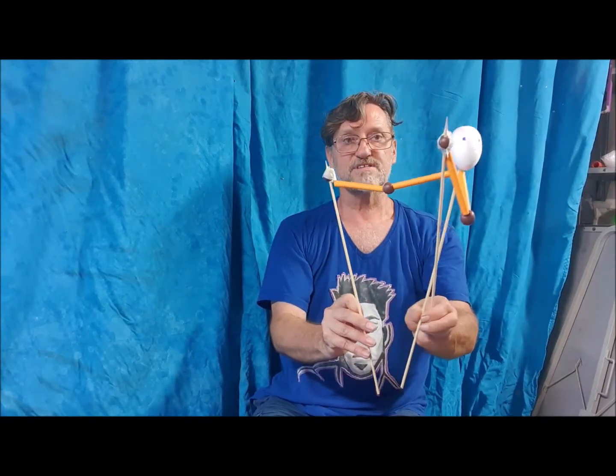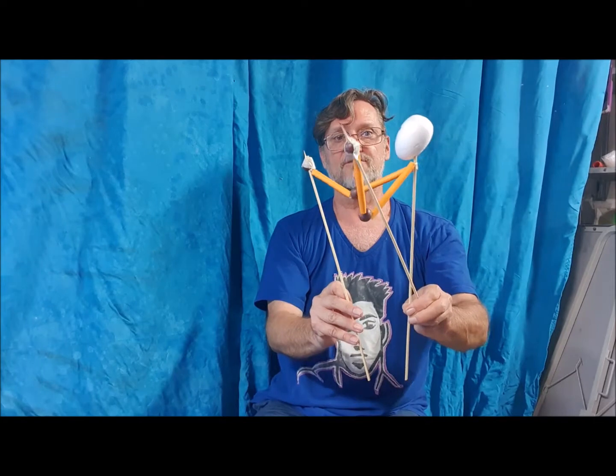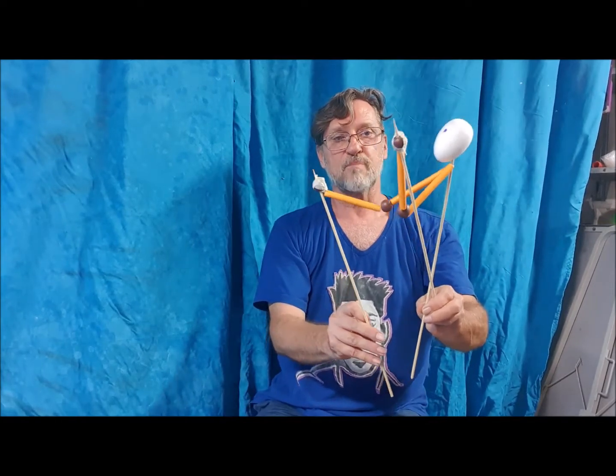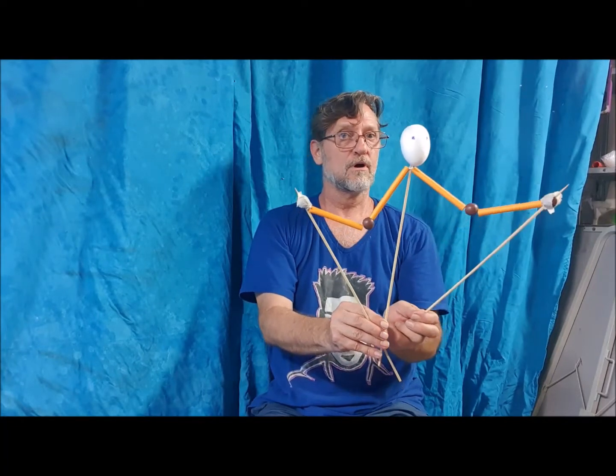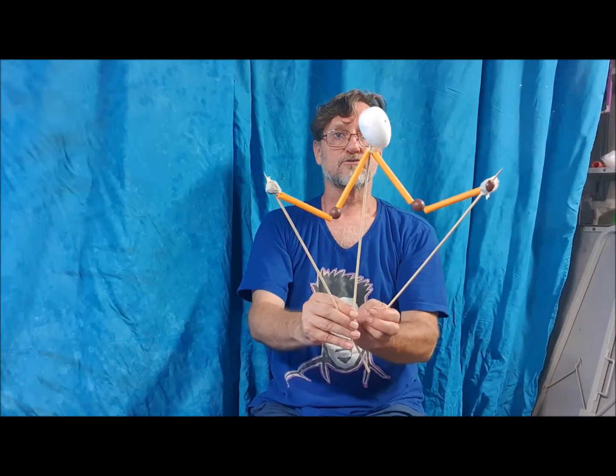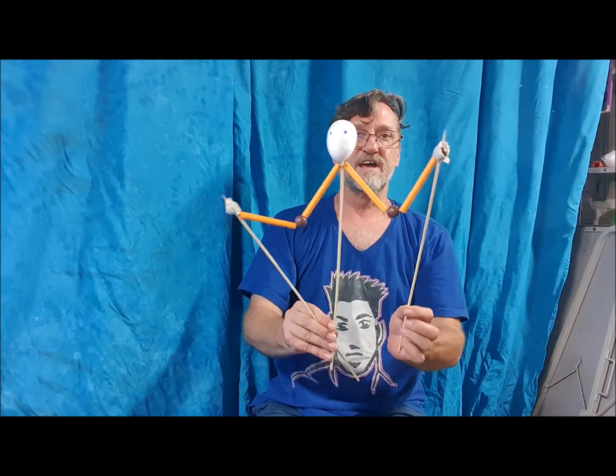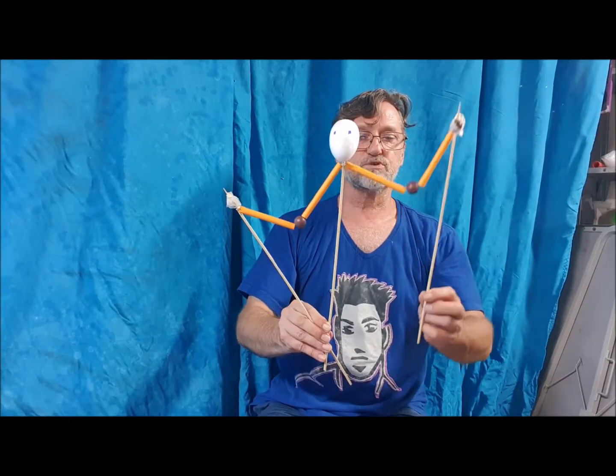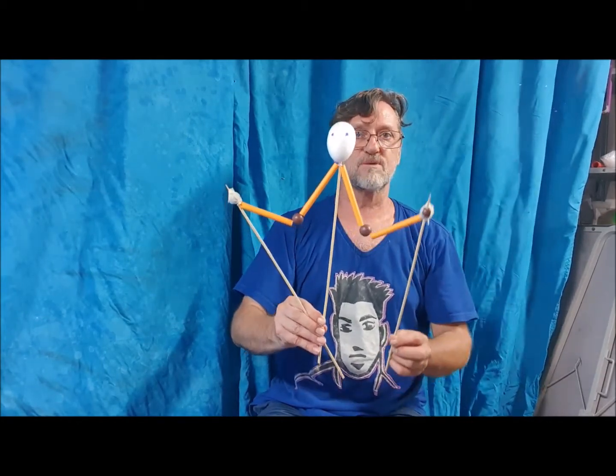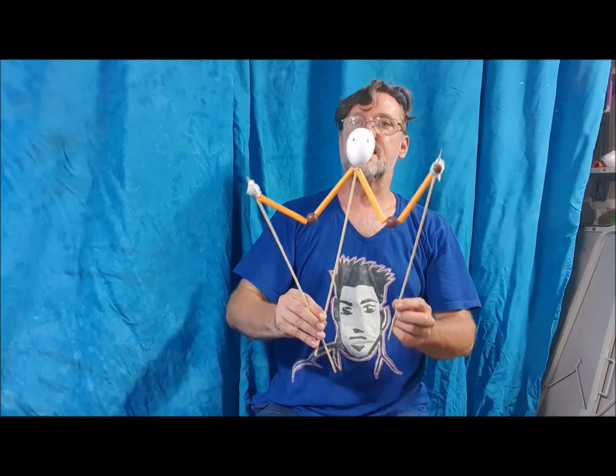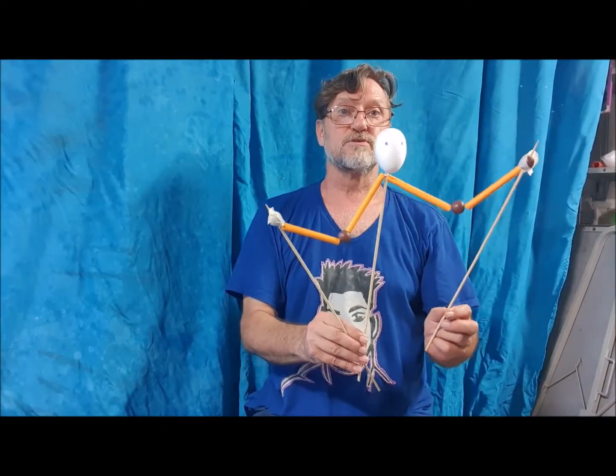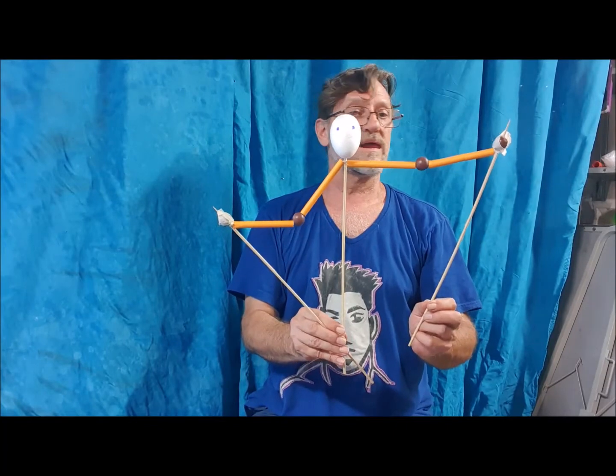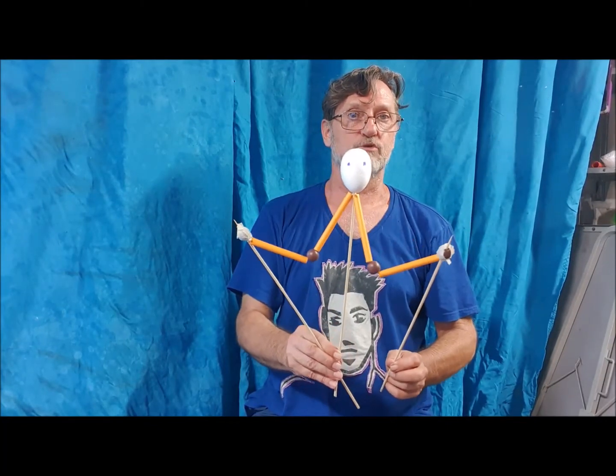So the central rod is being held by my finger and thumb and that allows me to control the weight of the puppet. The reason I put a bead in the center of each one of these is to give the elbow some weight so that it drops.